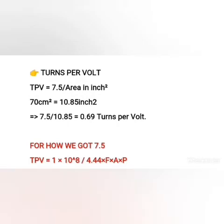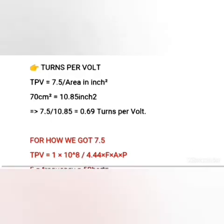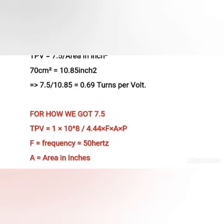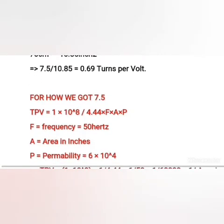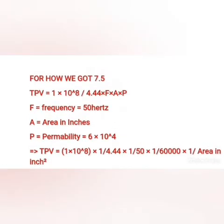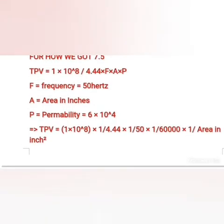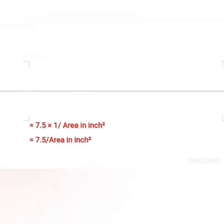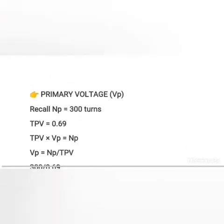The full formula for turns per volt is: 10 to the power 8, over 4.44 times frequency times area in inches squared times permeability. The frequency is mostly 50 or 60 Hz — here it is 50 Hz. Permeability is a constant nearest to the power of 4. When we substitute these known values — frequency, permeability, and other constants — we are left with 7.5 over area in inches, since that is the only unknown parameter. You can verify this yourself.